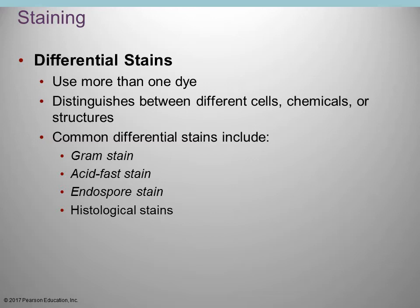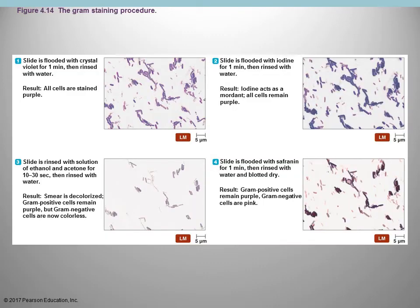A differential stain uses two stains, allowing you to distinguish between two different cells. Some differential stains used in microbiology include the Gram stain — the most fundamental basic stain — the acid-fast stain, the endospore stain, and various histological stains. The Gram stain is the major classification scheme for identification of bacteria; the first step is to determine whether the bacteria is Gram positive or Gram negative.